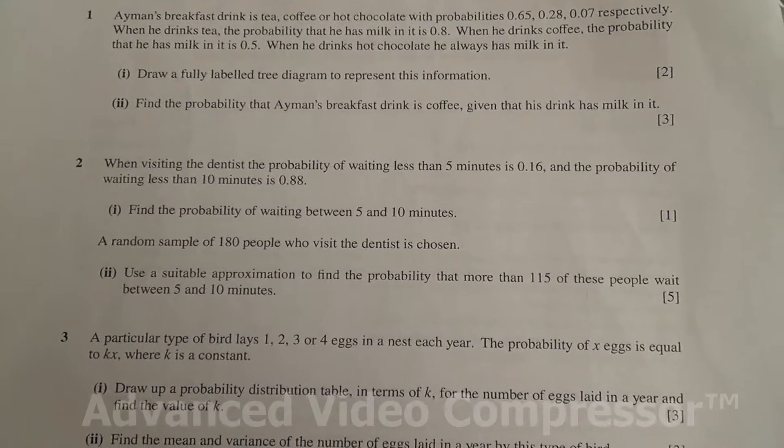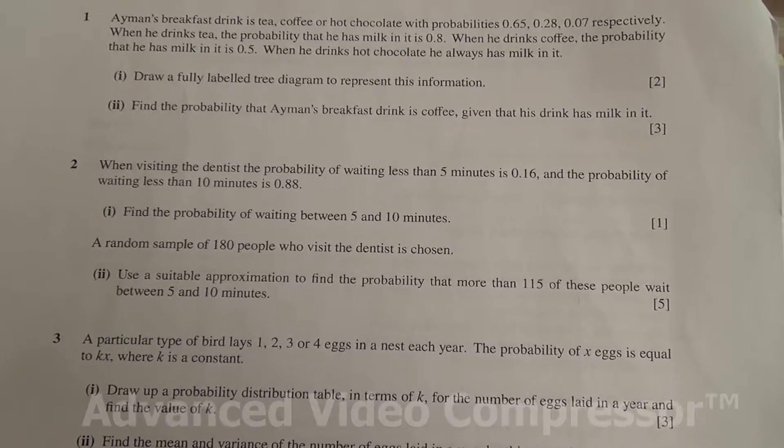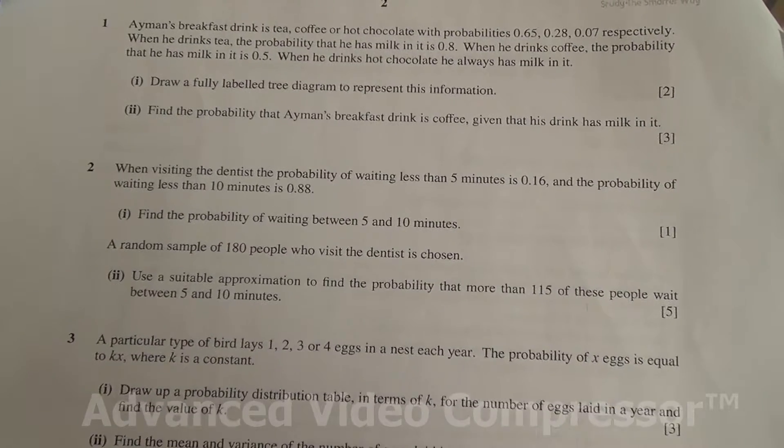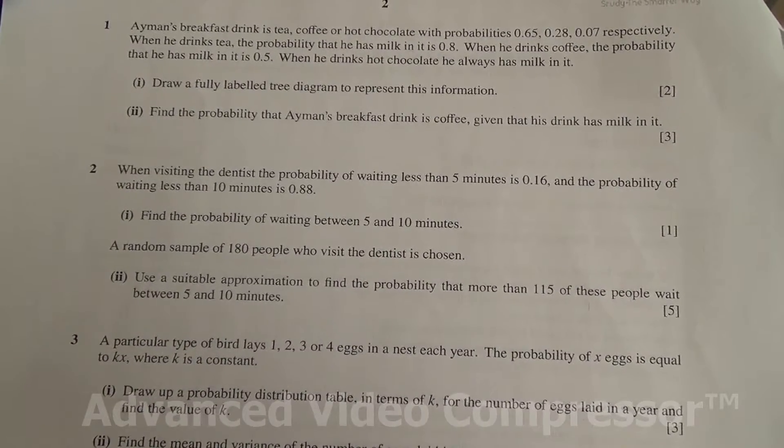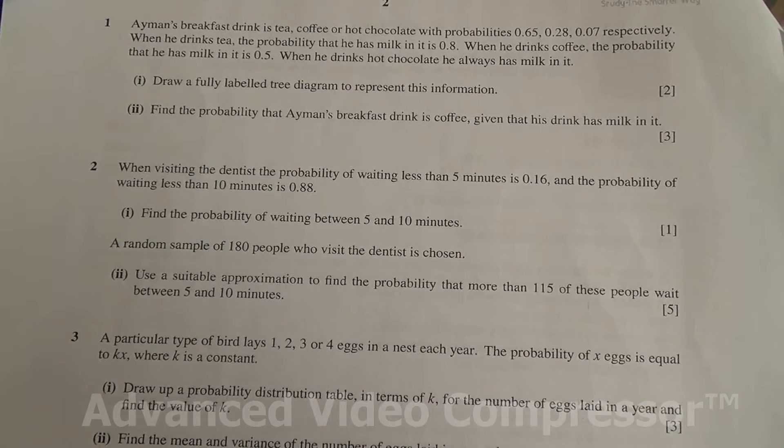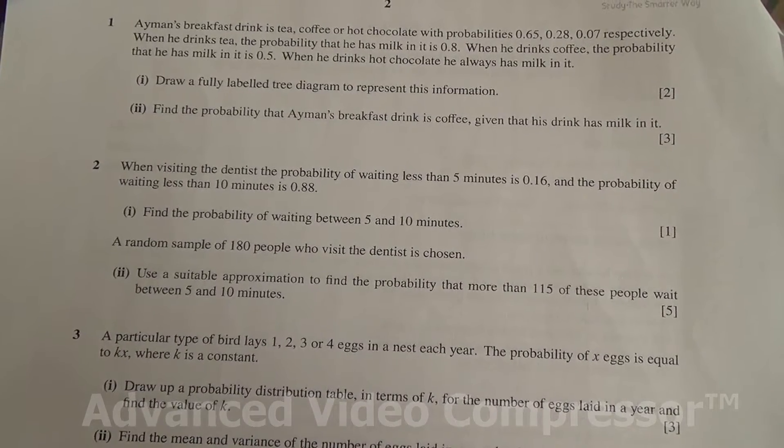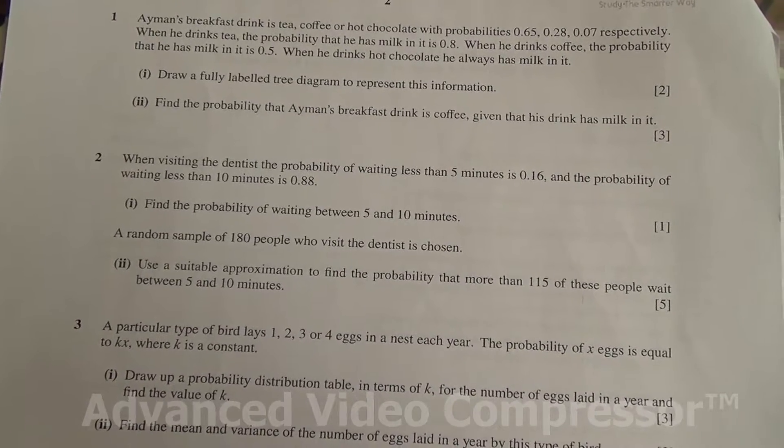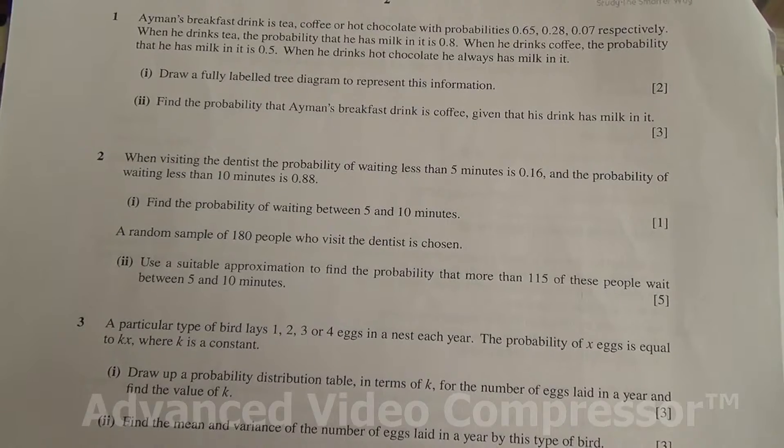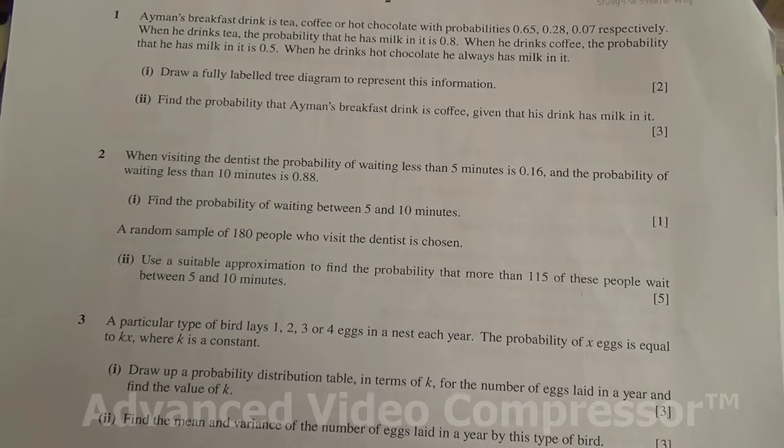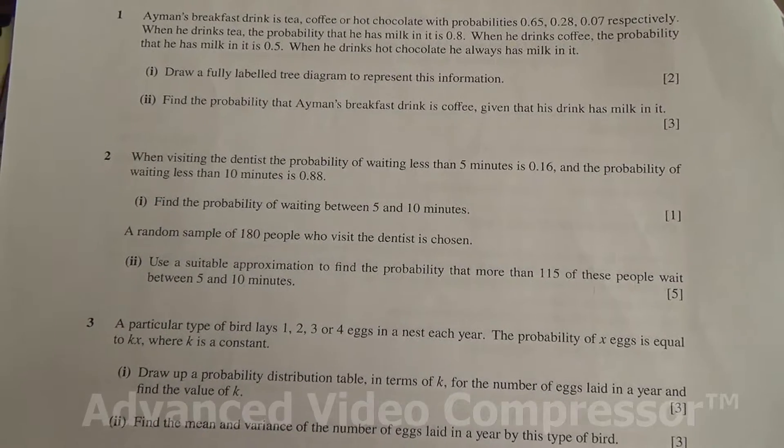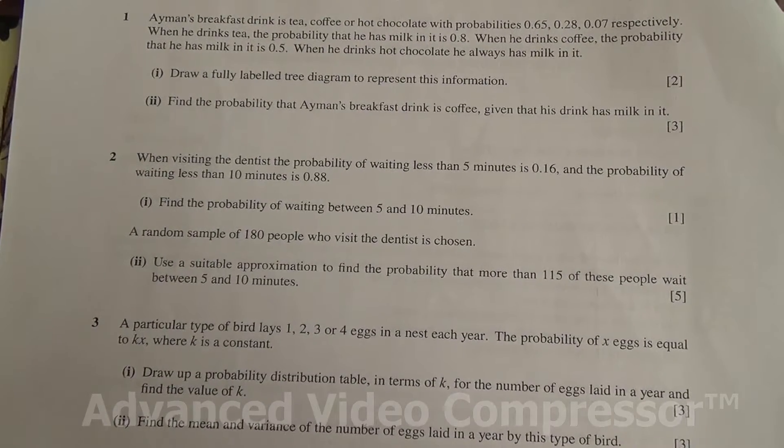Question number 2. When visiting the dentist, the probability of waiting less than 5 minutes is 0.16, and the probability of waiting less than 10 minutes is 0.88. Find the probability of waiting between 5 and 10 minutes for the first part. For the second part, a random sample of 180 people who visit the dentist is chosen. Use a suitable approximation to find the probability that more than 115 of these people wait between 5 and 10 minutes.